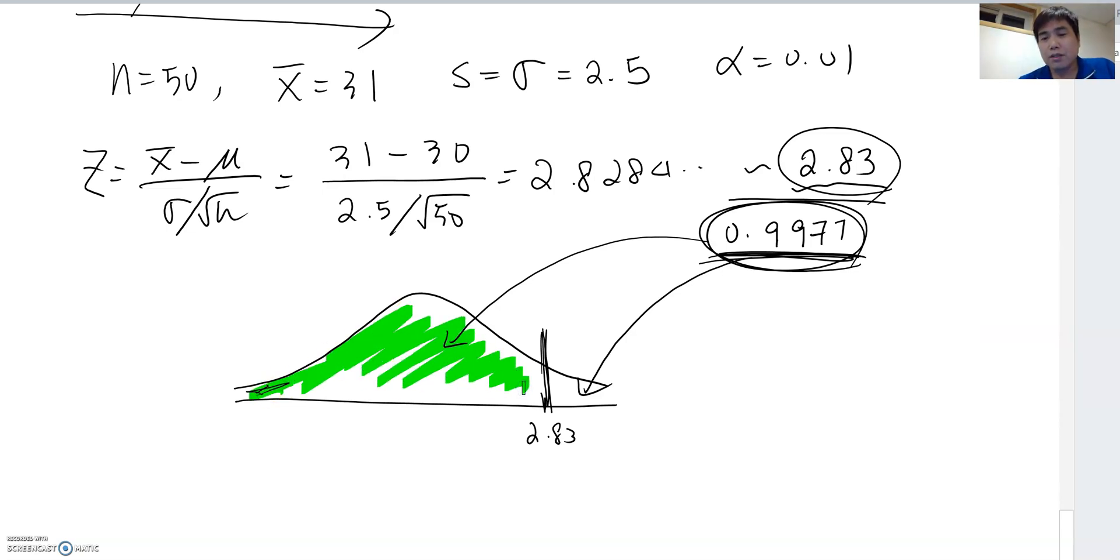But this is a right-tail test, which means we want to find this side area. How do we find the area value for this side? You have to subtract this from one. So one minus 0.9977, then you get 0.0023. That will be your p-value. The reason we subtract from one is because the z-table value represents the cumulative area from the left side. Therefore, to find the right side area, you have to subtract it from one.